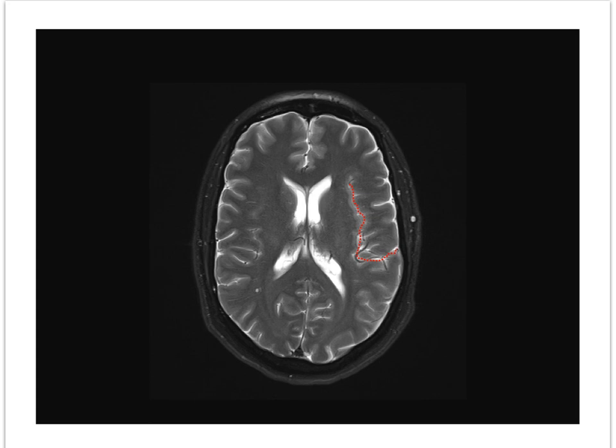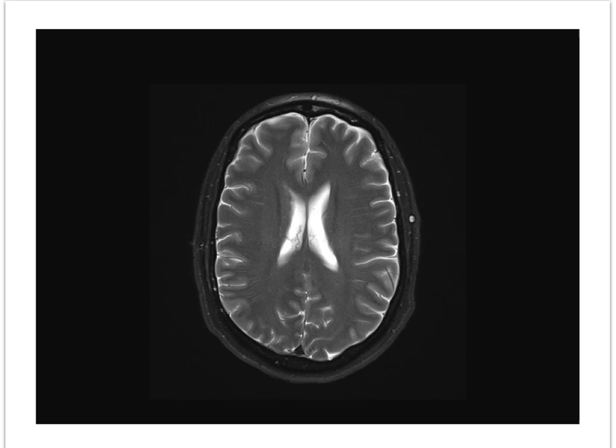As we progress cephalad, this is the final section that contains the lateral sulcus. Some choroid plexus is visible coursing over the top of the thalamus in the body of the lateral ventricles. Corona radiata projections from the internal capsule extend upward toward the cortex as we make our way up through the lateral ventricles.